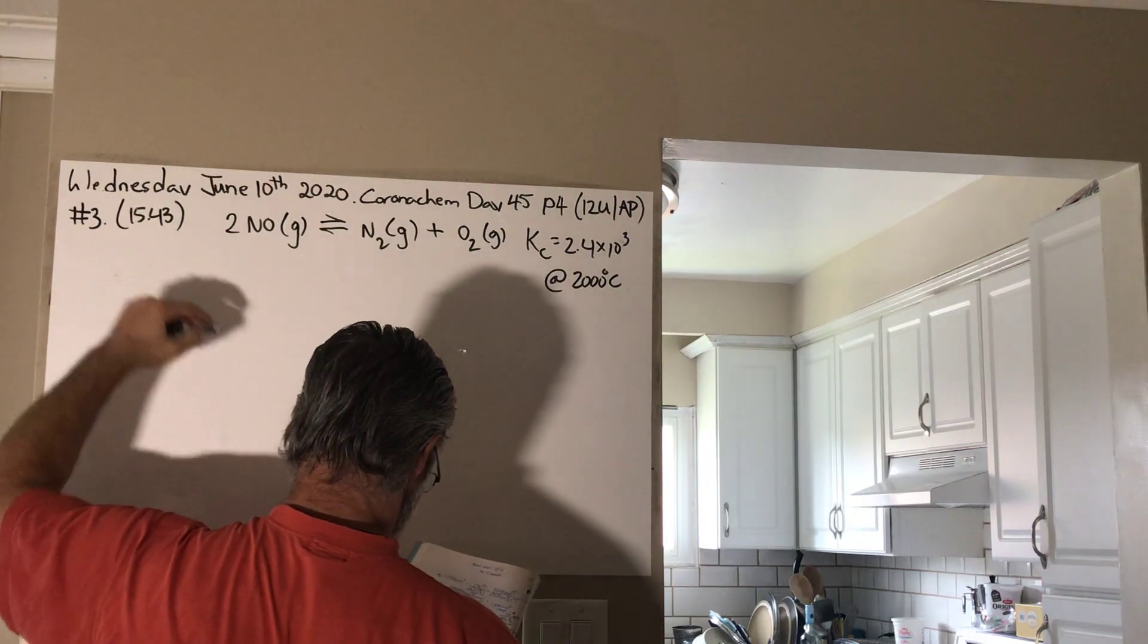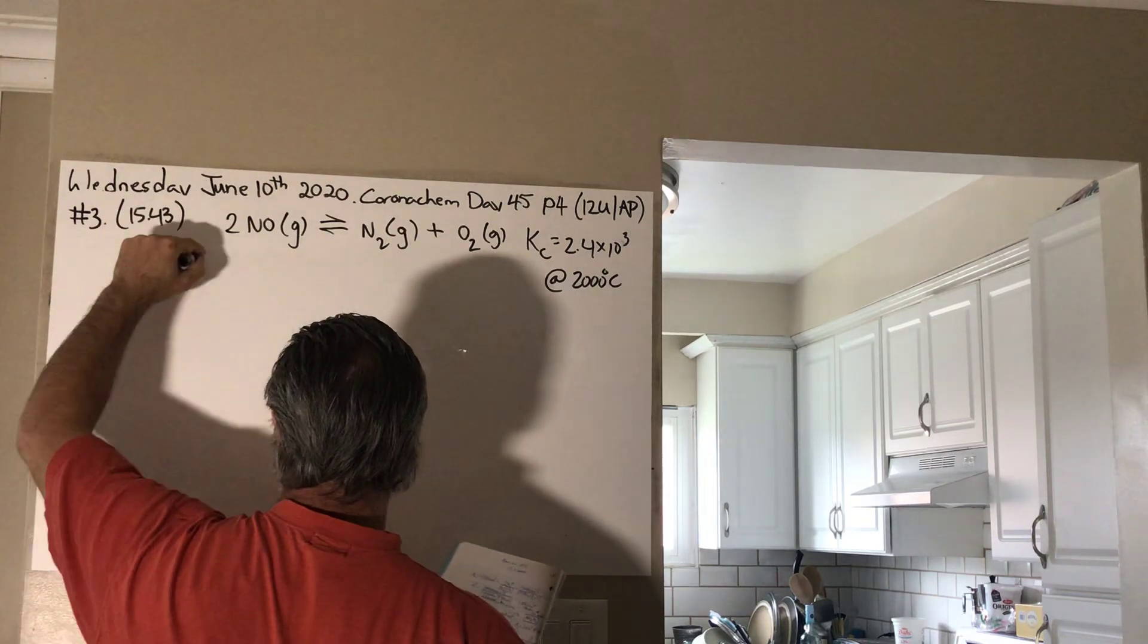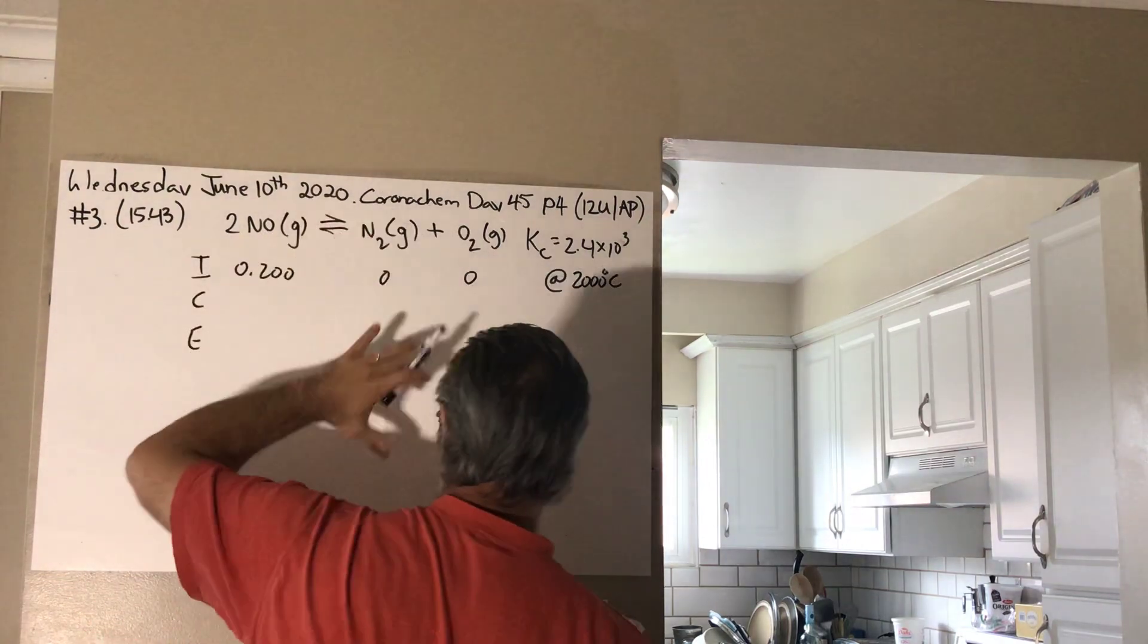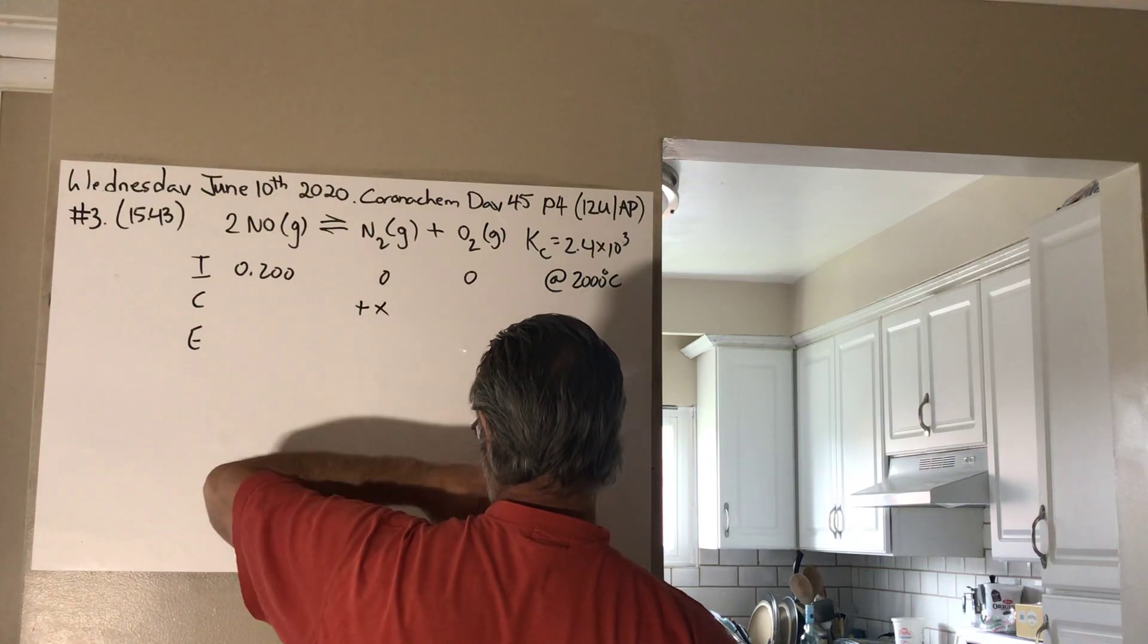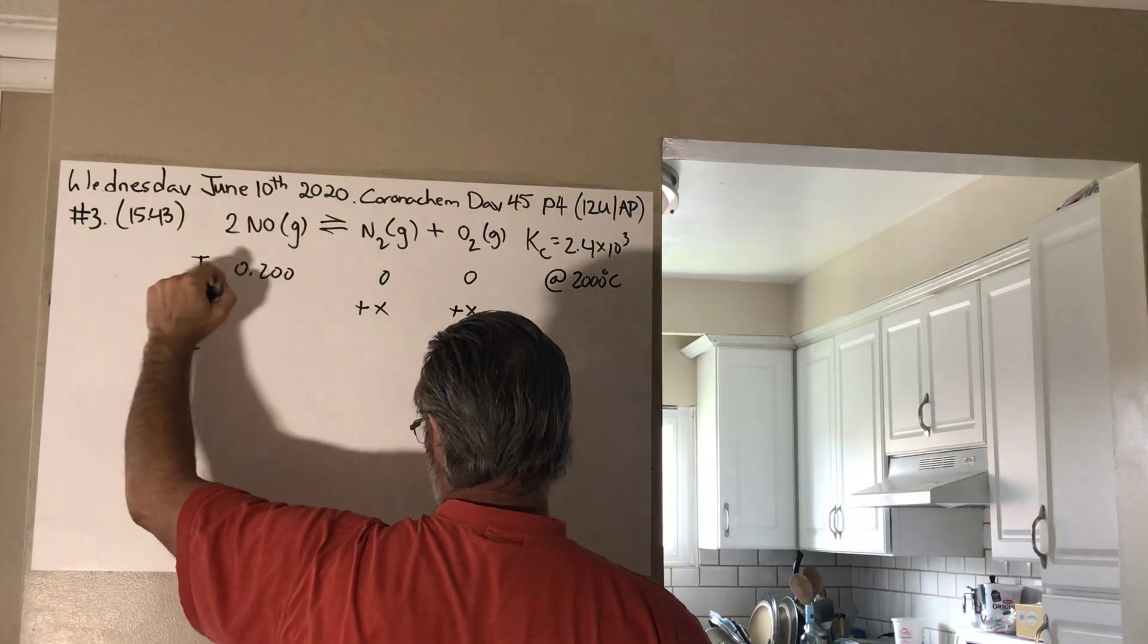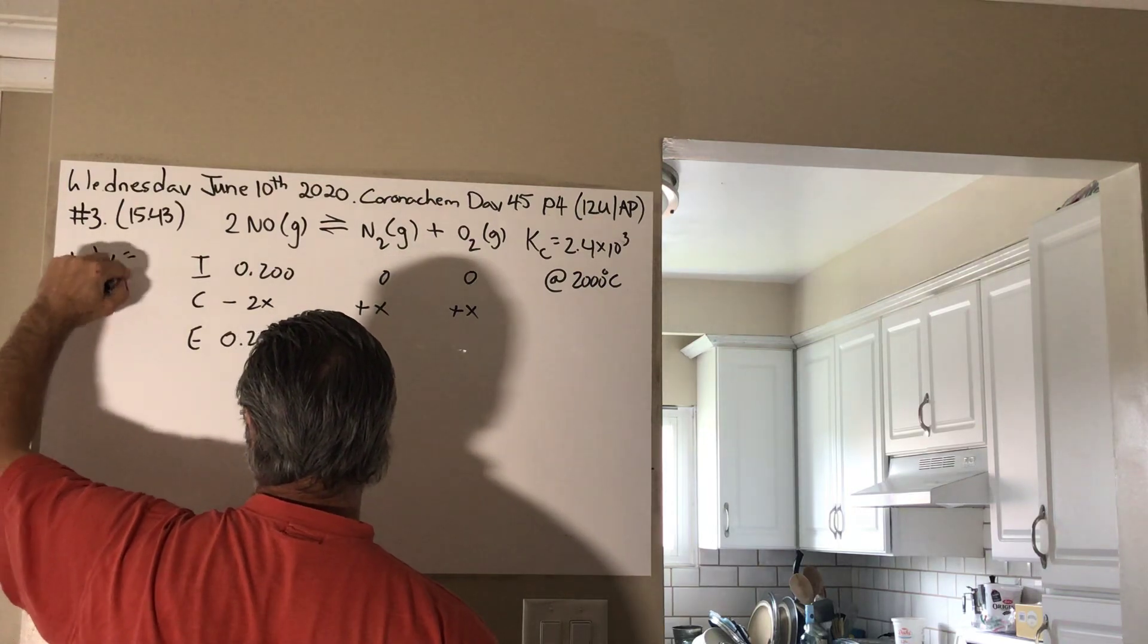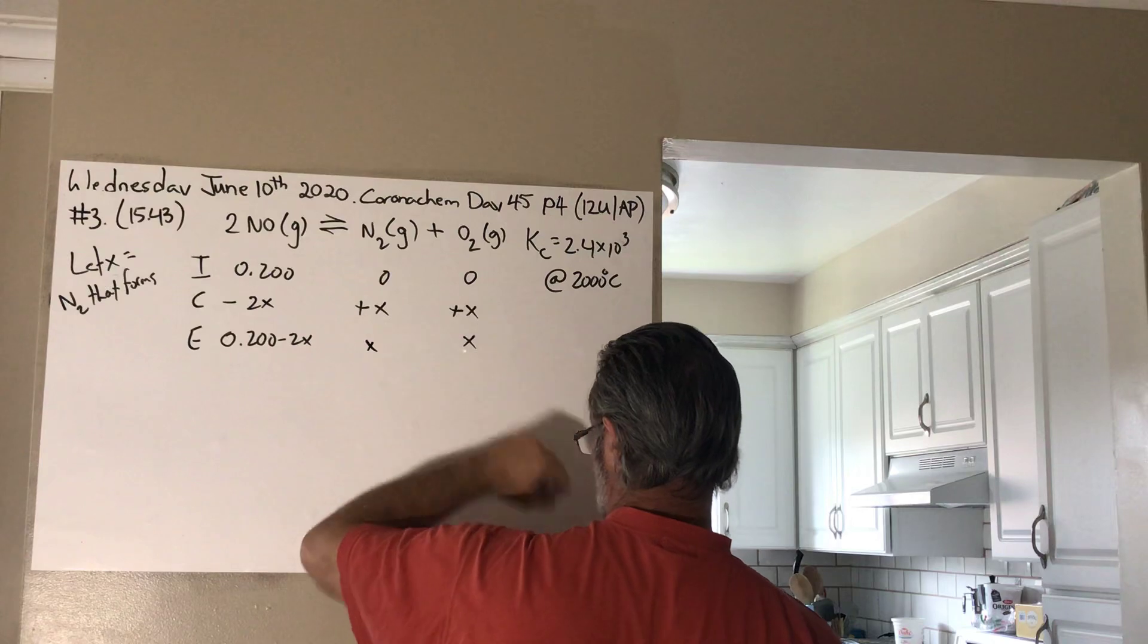And sometimes, you know, when you start writing the information down, at first you don't know what you're doing, but then all of a sudden you see it all laid out, it starts to make sense to you. So, get into the habit of laying out the information that the problem is giving you. So, we know that the ice table, what do we know initially? We know that we have 0.2 of this. This is all zero. We know that a certain amount of it is going to react. But let's establish X as the amount of nitrogen that's produced at equilibrium. So, some amount of X of nitrogen is going to appear, which means also the same amount of oxygen is going to appear, which means 2X of nitrogen monoxide is going to disappear. So, at equilibrium, you're going to have 0.2 minus 2X. I should say, let X equal N2 that forms. Okay? So, that way we can, it's always important to define your variable. And then you get X and X at equilibrium.